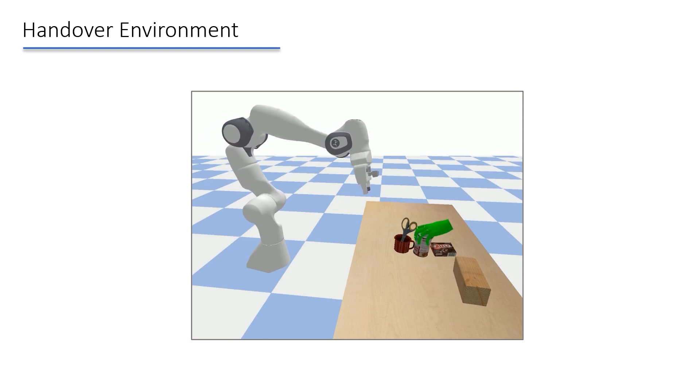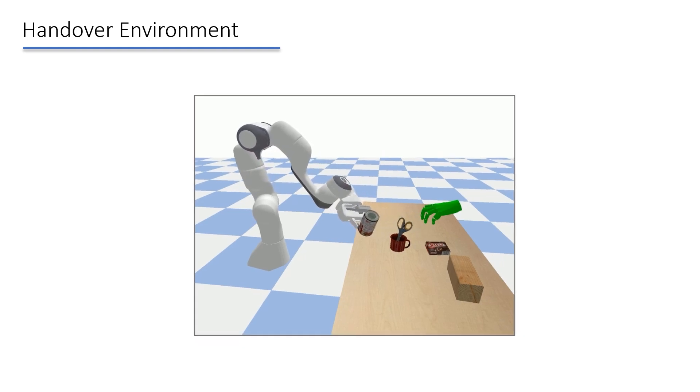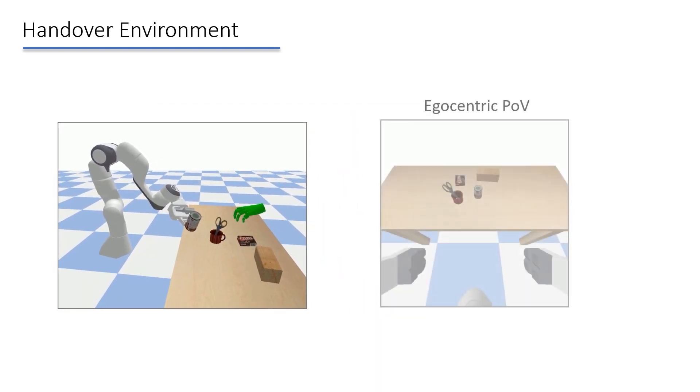The human hand mimics trajectories recorded from motion capture data. The goal of the robot is to grasp the object from the human and bring it back to a designated location.